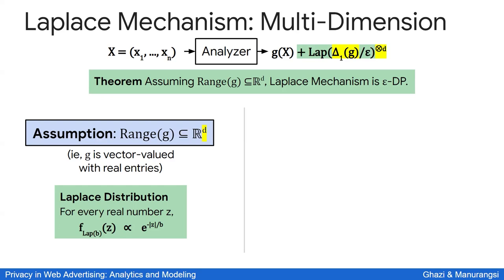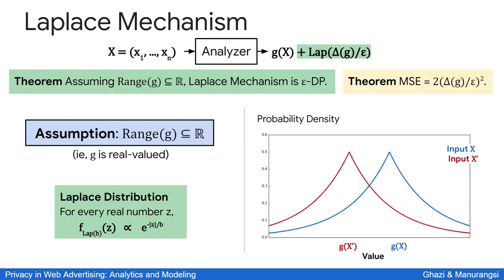To clarify: g(x) can be any numerical function you want to compute — a sum query, count query, average query, or histogram query. These noise addition mechanisms apply to numerical output functions, not other types of outputs.